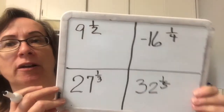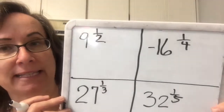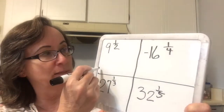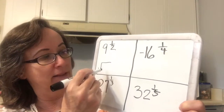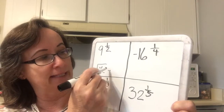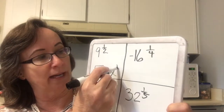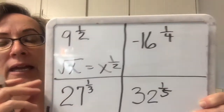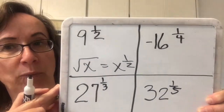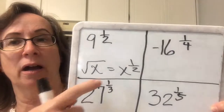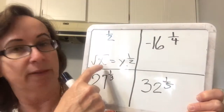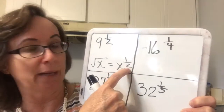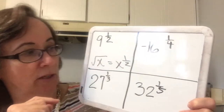Remember that we started off on this section with a definition, and the definition was simply that the square root of x is x to the 1/2 power. Basically we can change from our radical form to our exponent form, and we should be able to go back and forth between these two.